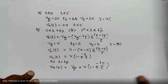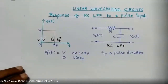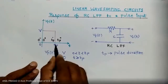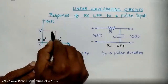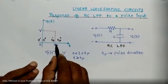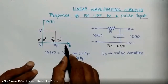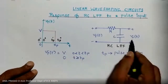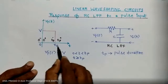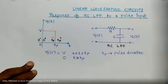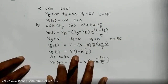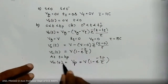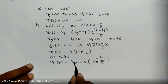Our input signal is capital V volts from 0 to tp, and 0 volts from tp to infinity. We find the output voltage in two intervals: 0 to tp gives V_out1(t), and tp to infinity gives V_out2(t). Over 0 to tp, the output is as derived, and at t equal to tp it is represented as V suffix capital P.